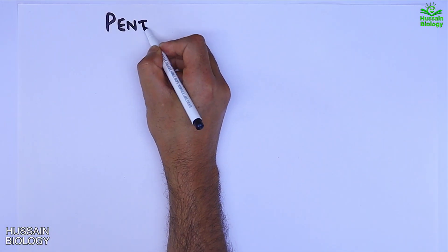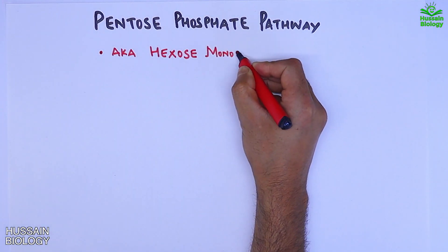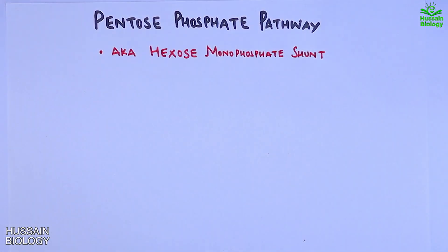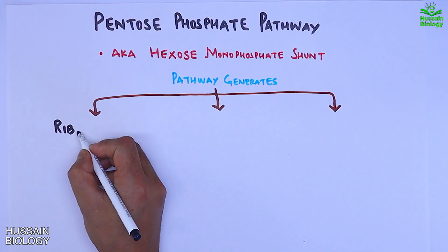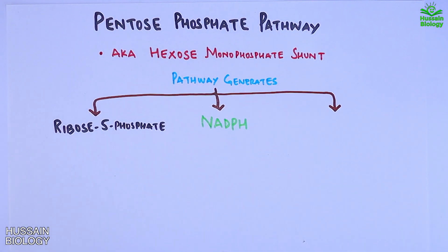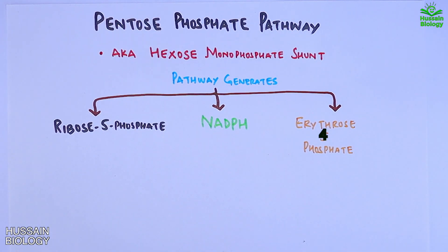In this video we'll be discussing the pentose phosphate pathway, also known as the hexose monophosphate shunt. This pentose phosphate pathway mainly generates three important molecules: ribose-5-phosphate, NADPH, and erythrose-4-phosphate.